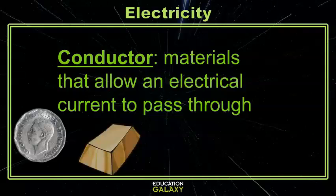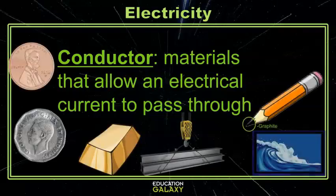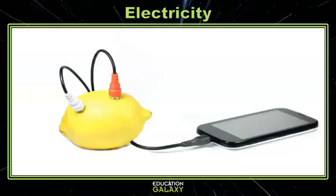Conductors are generally made out of metal, like silver, gold, copper, steel, but can also be other things like graphite, salt water, and even acidic fruit juices. That's why you can use a lemon to create a battery for your phone.